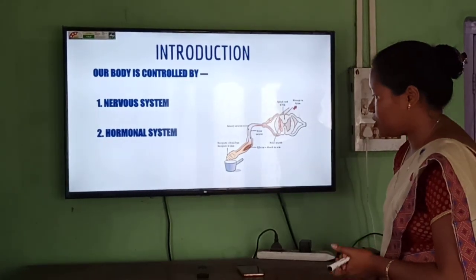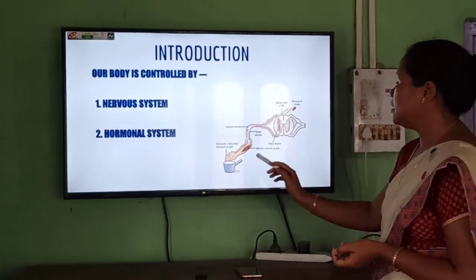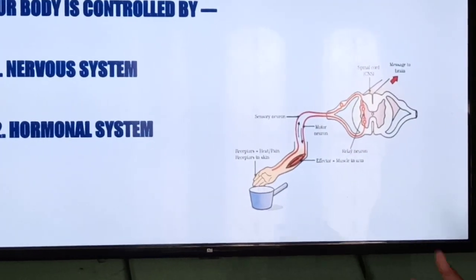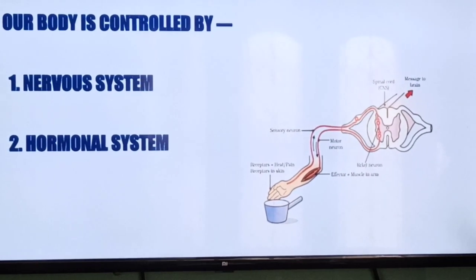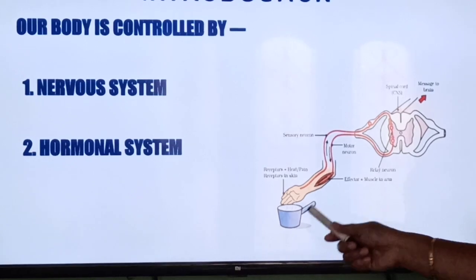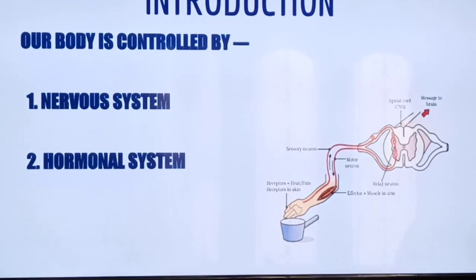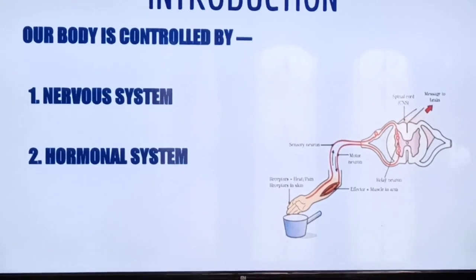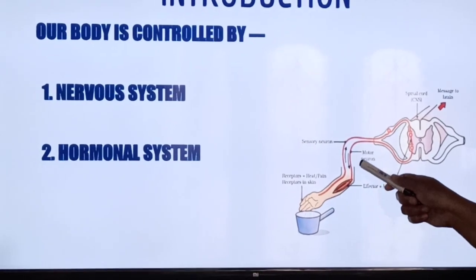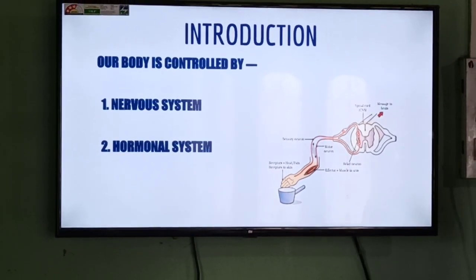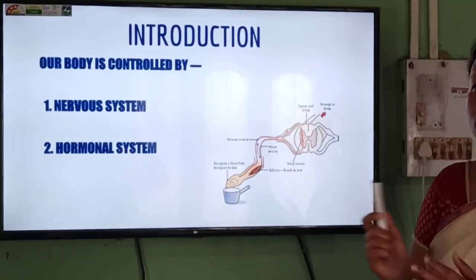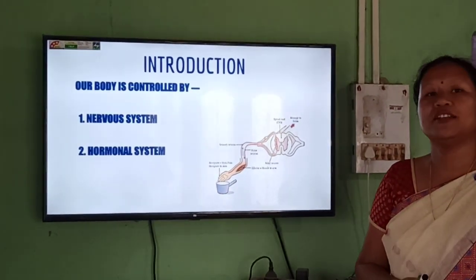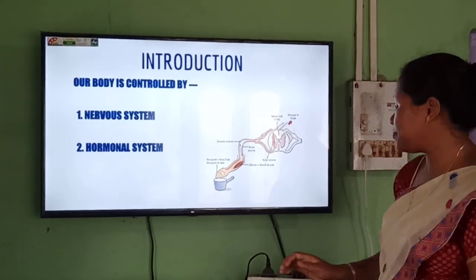Now, take a look at this picture — this is a hot object, maybe a hot cup of water. If you are going to touch that hot object, how will we know that this object is hot, or that touching it may burn your hand? That message will be traveled to the brain first, and the brain will send the signal that this object is hot and you should not touch it. So how does all this happen in our body — that is what we are going to discuss now.